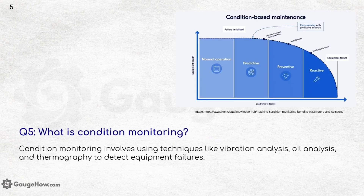What is condition monitoring? Condition monitoring involves using techniques like vibration analysis, oil analysis, and thermography to detect equipment failures. It is itself a monitoring technique which uses a combination of techniques like vibration analysis, oil analysis, and thermography.